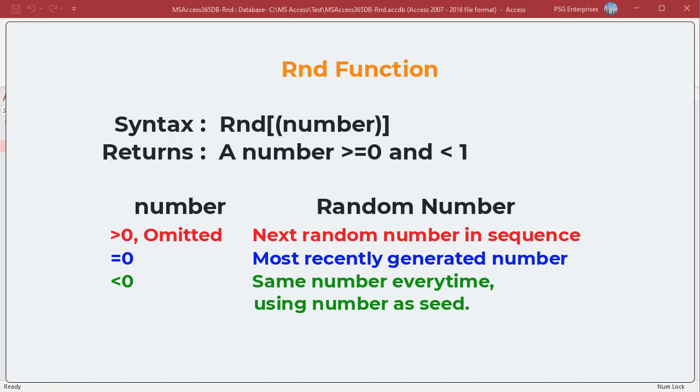If the number provided is greater than 0 or the number parameter is omitted, the RND function will return the next random number in the sequence using the previously generated random number as the seed. If the number is 0, the RND function will return the random number that was most recently generated. If the number is less than 0, the RND function will return a random number using that number as the seed, returning the same random number always.